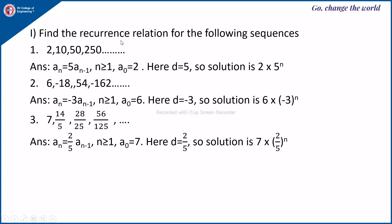Now for the problems: find the recurrence relation for the sequence 2, 10, 50, ... Observing: 2×5 = 10, 10×5 = 50, 50×5 = 250. So a(n) = 5·a(n-1), n ≥ 0, with a(0) = 2. Here d = 5 is a constant, so the solution is a(n) = 2·5^n, for n ≥ 1.